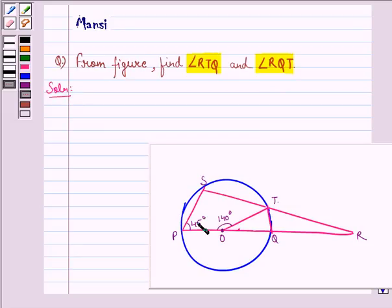First of all, let us name the 45 degree angle as angle 1, this angle as angle 2, this as angle 3, this as angle 4, this as angle 5, and the 140 degree angle as angle 6.